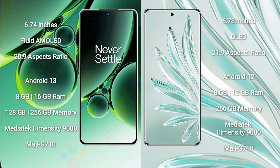OnePlus Nord 3 comes with 8GB or 16GB RAM and 128GB or 256GB internal storage, powered by a MediaTek Dimensity 9000 processor with Mali-G710 GPU.